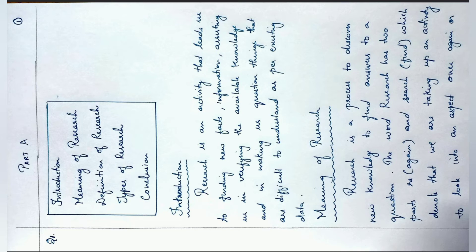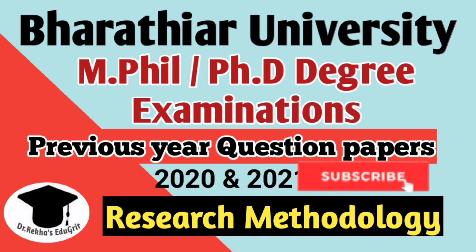For example, for a question on research, you would write: introduction, meaning of research, definition of research, types of research, and finally conclusion — all listed in a box. Then you explain each point in detail. For theory examinations, this is the procedure to follow. If it is a problem paper, you can directly go to the solution. On the top right corner, mention the page number so it's easy to track the number of pages written.